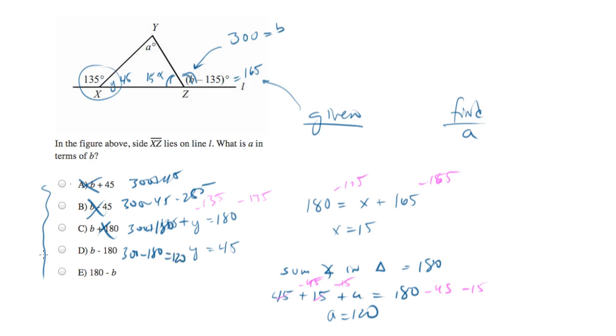And bingo, we've got our answer. Just to check E just to be sure, 180 minus 300 is negative, so that's off. And that's how we figure it out.